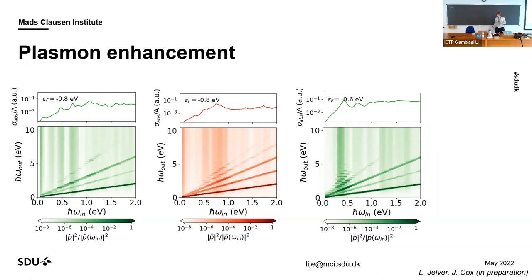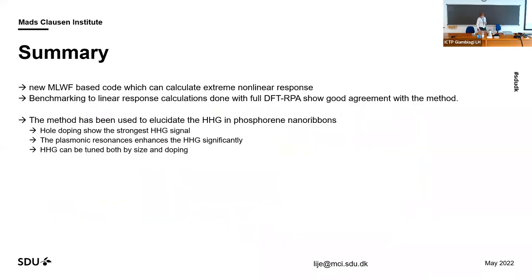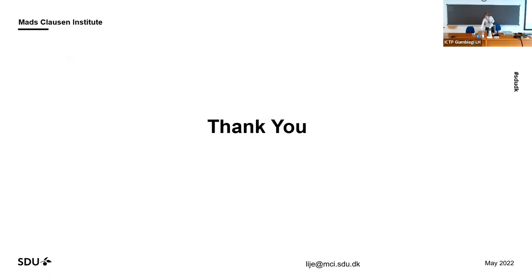This shows that the systems I'm working with are perhaps slightly too small to really get into these effects, so I would like to go to larger systems — we are pushing to get to 5 and 10 nanometers. To summarize: I've made this new code based on maximally localized Wannier functions that can calculate extreme non-linear effects. Benchmarked against DFT response calculations, we get quite nice agreement. We've used this to look at high harmonic generation especially in phosphorene nanoribbons, where hole doping shows the strongest high harmonic signal, and we can enhance the signal with plasmonic resonances, tuned by both ribbon size and doping level.